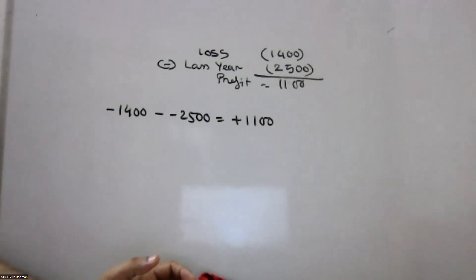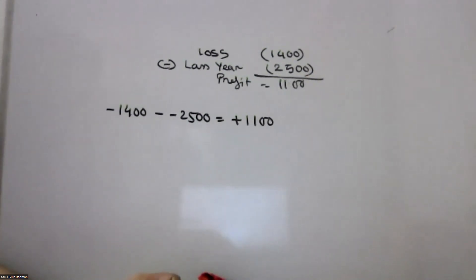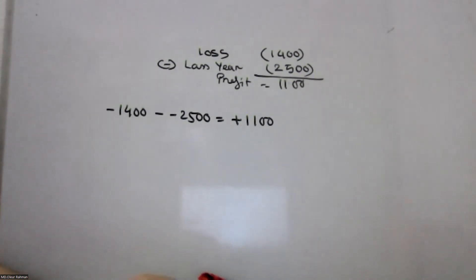Unrealized security fair value adjustment — debit. Unrealized holding gain or loss — credit.